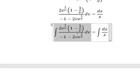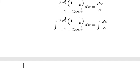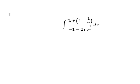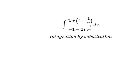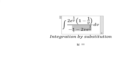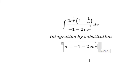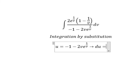Now I will concentrate on this integral. We can use integration by substitution, so I will put u equal to this expression. Now we need to take the first derivative of both sides. This term is a constant, so we get zero here.